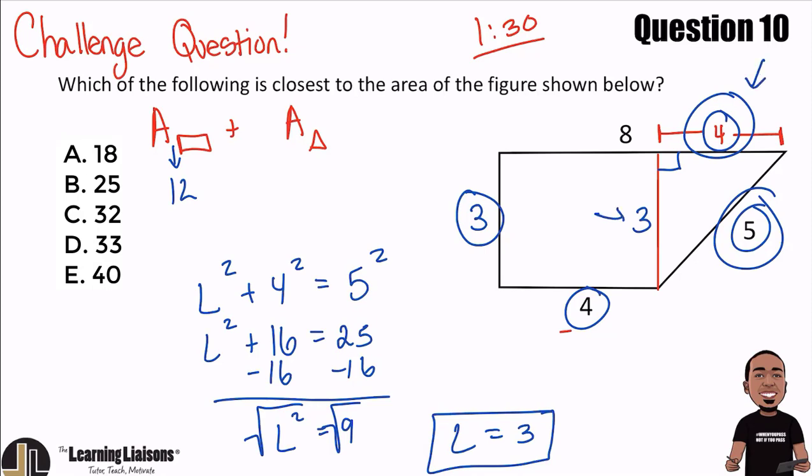And then the triangle, it'll be four times three. So the base times the height. But remember, the area of a triangle is one half base times height. So that'll be one half of three times four. Three times four is 12. Half of that is six. 12 plus six.